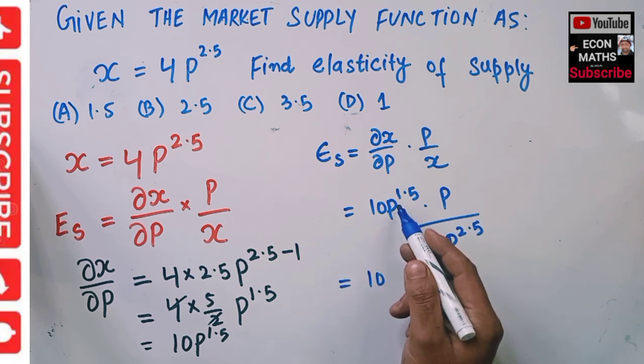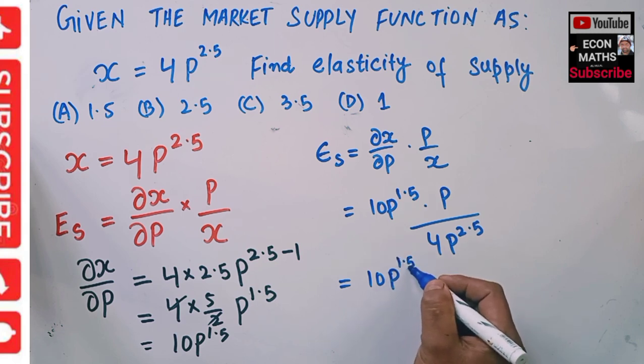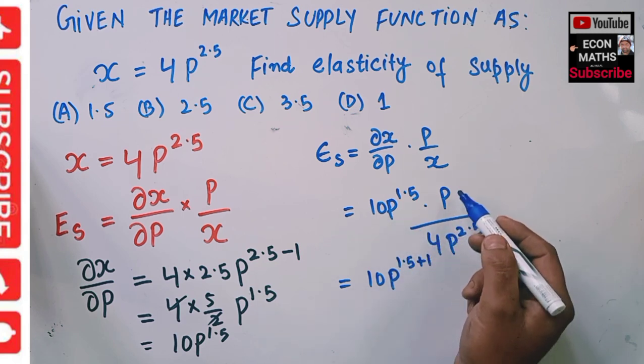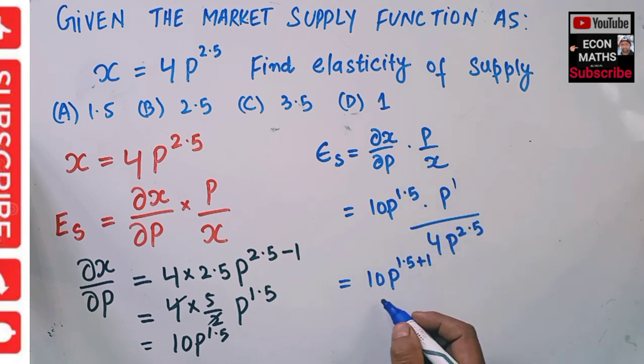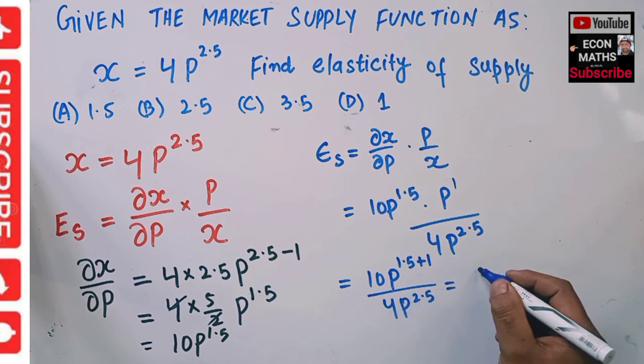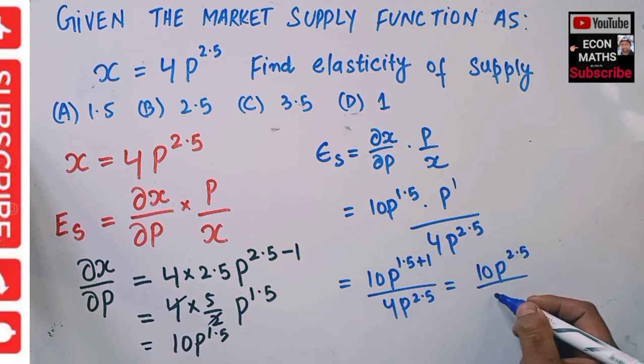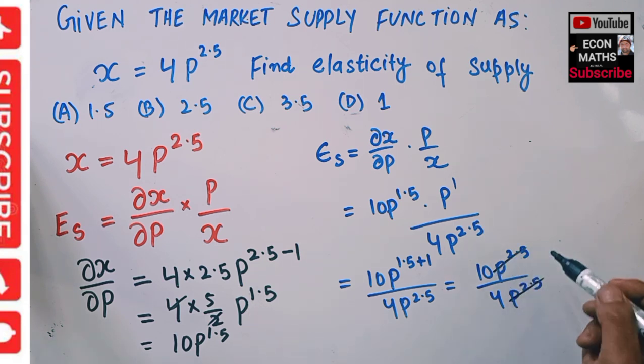Here the bases are the same, we can add them up. So we have P^1.5 × P^1 = P^2.5. We have 10P^2.5 divided by 4P^2.5. The P^2.5 terms cancel, and we are left with 10/4, which comes out to be 2.5.